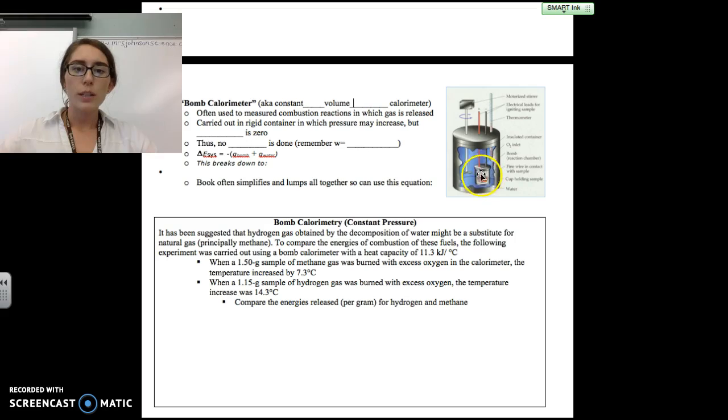So this little rigid bomb here - the pressure is definitely going to go up when we do a combustion reaction because we're creating moles of gas. However, because it's a rigid container, the volume cannot change. So the delta V, or the change in volume, is going to be zero. This means that there's no work done here, because the equation for work is negative P delta V. If our delta V is zero, we have zero work.